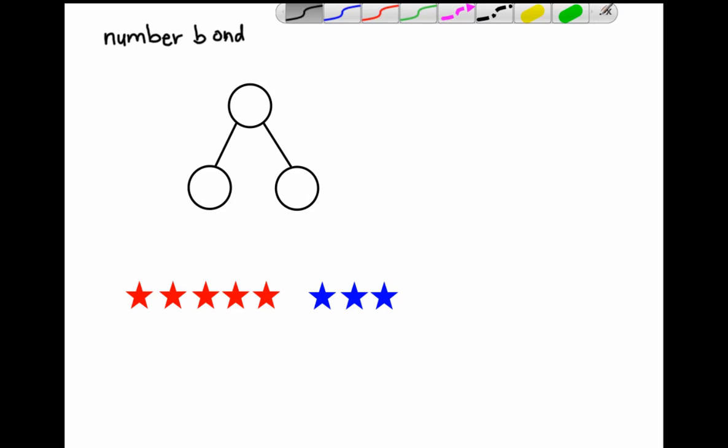As I said, this right here is called a number bond. A number bond is made up of three different components. The first component is called the whole, and then the whole is made up of two or more parts. Each of these are the parts. So in a number bond, you'll have a whole and at least two parts.